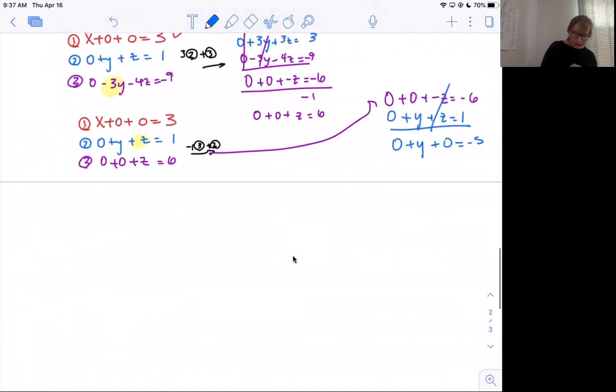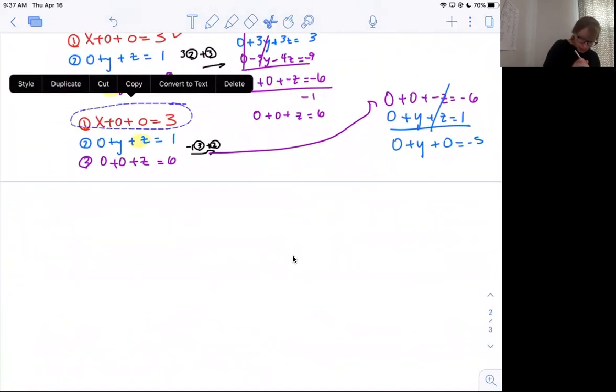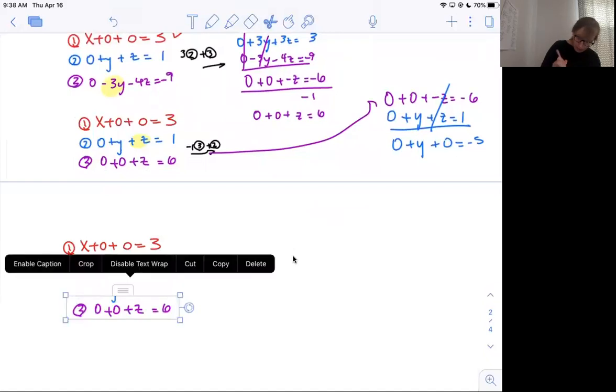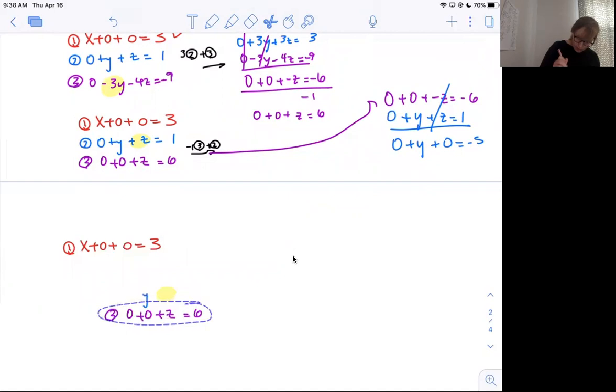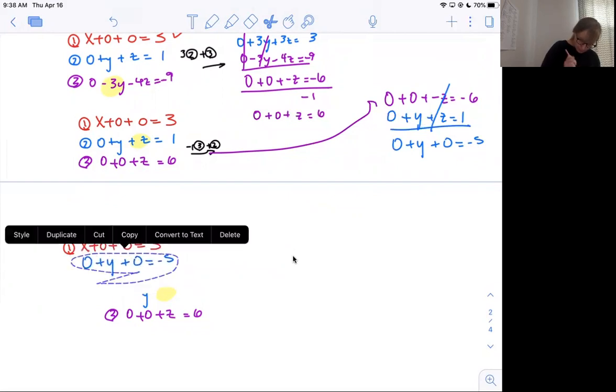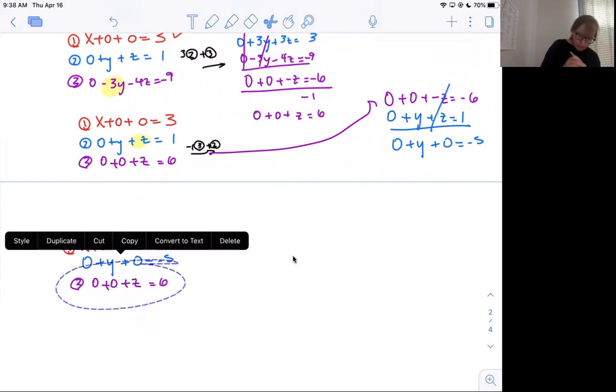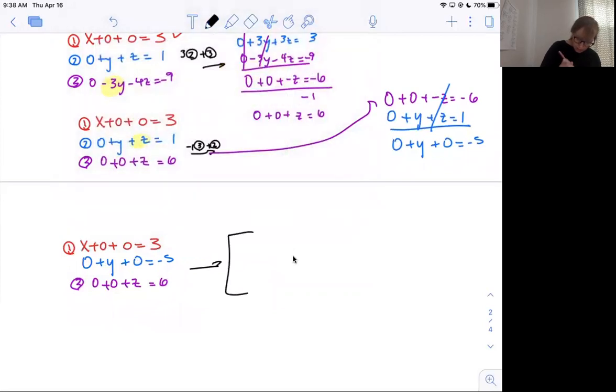My final answer: row 1 is good, row 3 is good, and row 2 we just made good. Notability is not doing well for me today. If I were to write this as a matrix, it would be 1, 0, 0, 3, 0, 1, 0, negative 5, 0, 0, 1, 6.